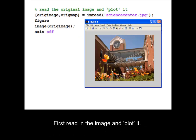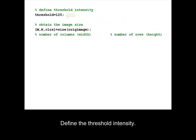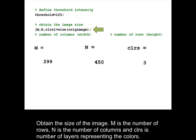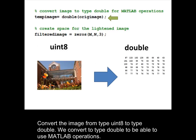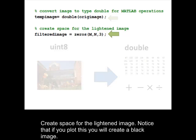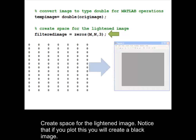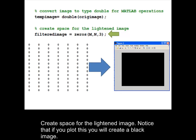First read in the image and plot it. Define the threshold intensity. Obtain the size of the image: M is the number of rows, N is the number of columns, and CLRs is the number of layers representing the colors. Convert the image from type Uint8 to type double. We convert to type double to be able to use MATLAB operations. Create space for the filtered image. Notice that if you plot this you will create a black image.